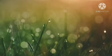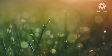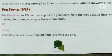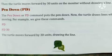The Pen Down command, or PD, puts the pen down so the turtle draws a line while moving. For example, if you give PD then FD30, the turtle moves forward by 30 units drawing a line.